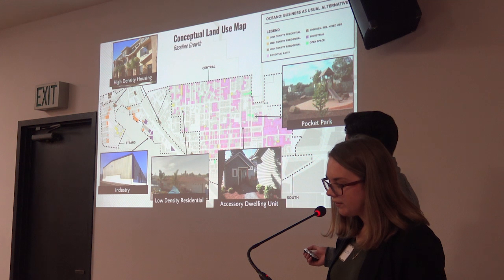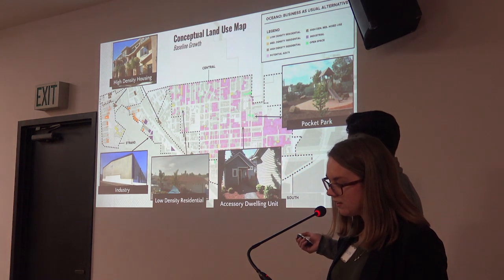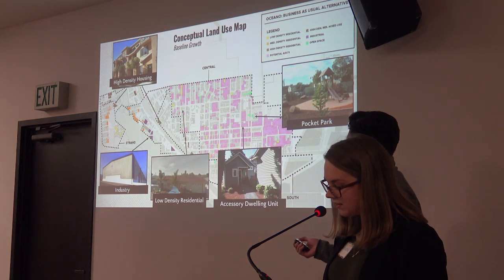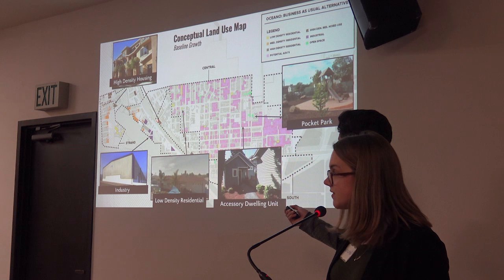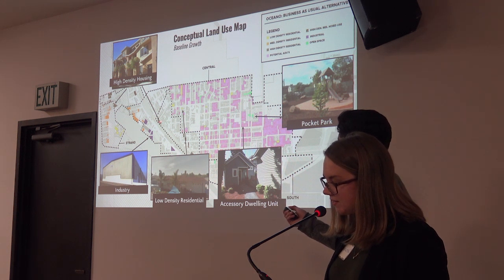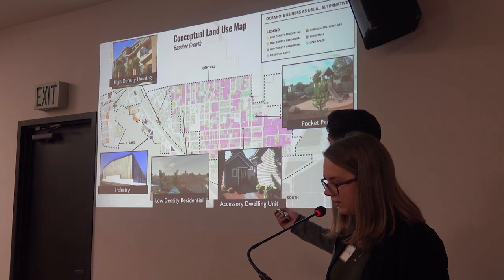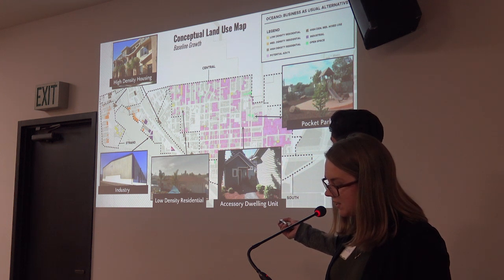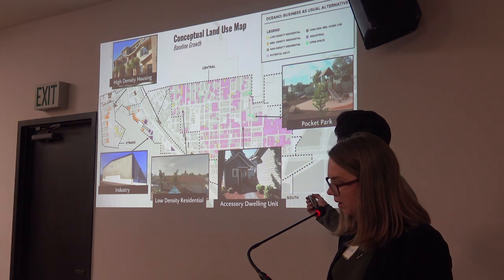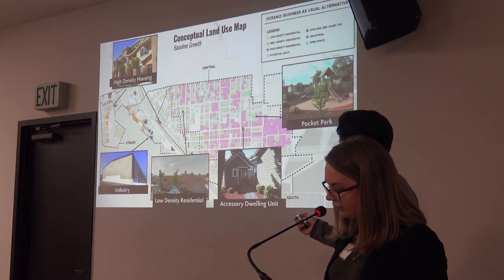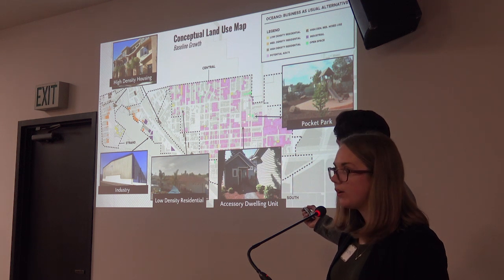The Strand neighbourhood continues to accommodate medium-density residential housing, indicated in orange, and low-density housing near the airport, indicated in yellow. The Pier Avenue and downtown neighbourhoods accommodate high-density residential and mixed-use, indicated in brown. The industrial district allows for medium-density housing in the northern half and light industrial uses in the southern half, indicated in purple. The central and southern districts continue to be predominantly low-density and are indicated in yellow. Parcels identified to have ADU capacity are pink, and parcels with the potential for new parks within central and southern Oceano are indicated in green.